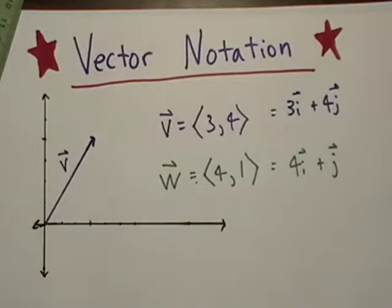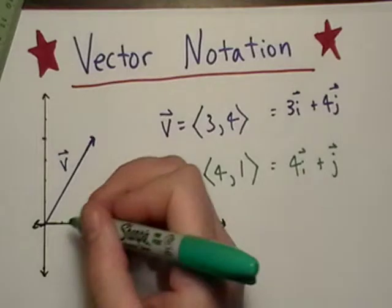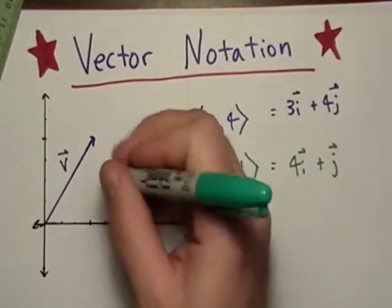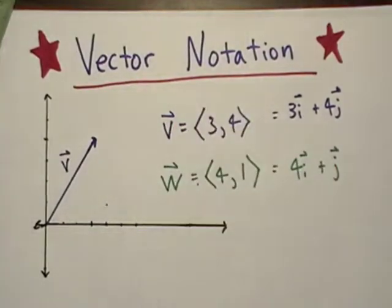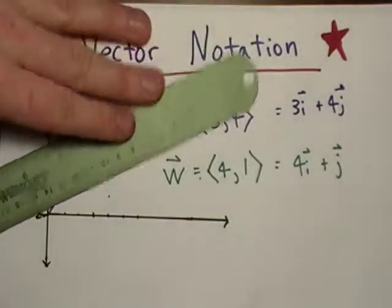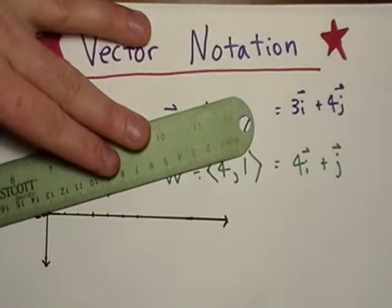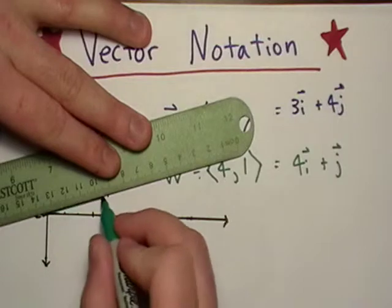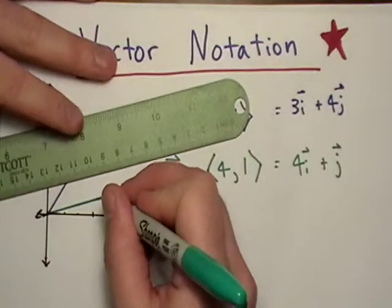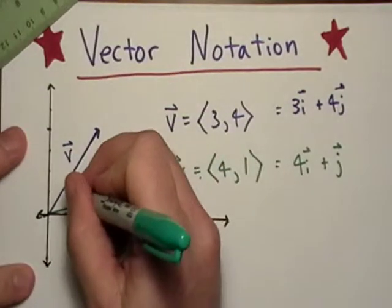Now we're going to look at w. Its horizontal component is 4. We go over 4: 1, 2, 3, 4. We go up 1, just 1. We'll call that w.